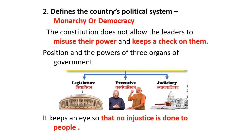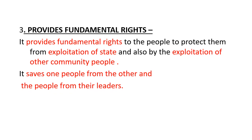The executive applies the law. The third organ is the judiciary. The judiciary follows the law and gives judgment on the basis of the rules mentioned in the constitution. By this way, the country's political system is clearly explained in the constitution. The constitution also keeps an eye so that no injustice is done to the people. The third importance of the constitution is that it provides fundamental rights to the people to protect them from exploitation, whether by the state or by other communities. It does not allow the state government or any community to rule over others, and it saves people from exploitation by their leaders.